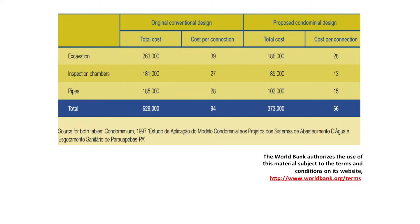This next slide shows a cost comparison between a connection to a traditional sewer system and a condominial system at another location. You'll note that for this case a connection to both types of systems is substantially cheaper. In this example, the condominial system is still cheaper — about 40 percent — than the traditional system.